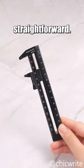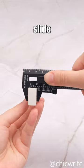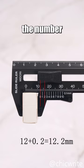Using this ruler is straightforward. Simply place the object and slide. First, align the zero with a number. Then find the number where the upper and lower lines coincide.